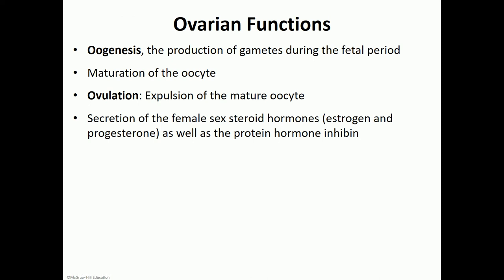The functions of the ovaries are both the production of the oocytes, a process known as oogenesis, plus ovulation. On the other hand, it has an endocrine function where it secretes the female sex steroid hormones, estrogen and progesterone, and it also secretes a protein hormone known as inhibin.